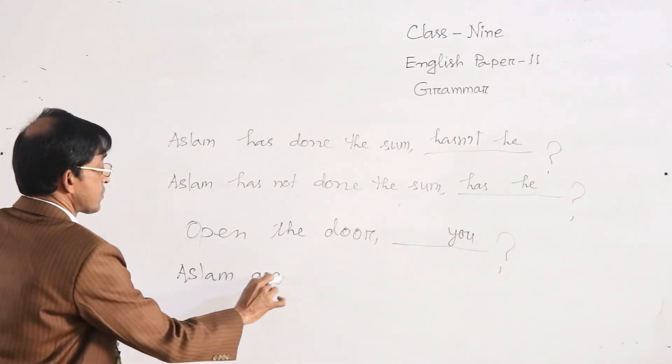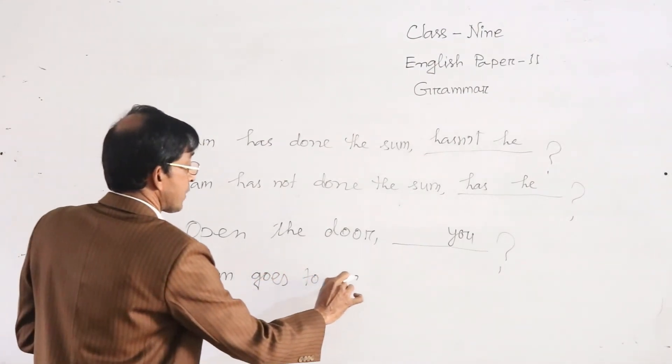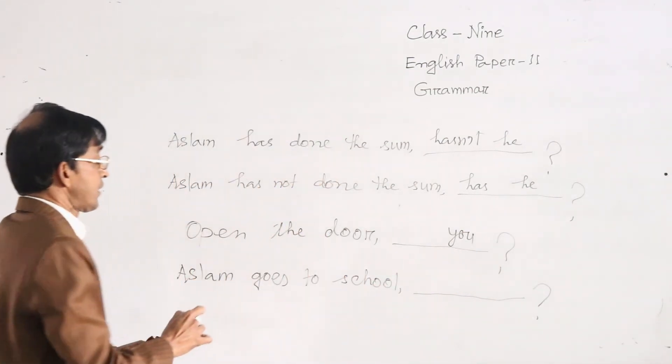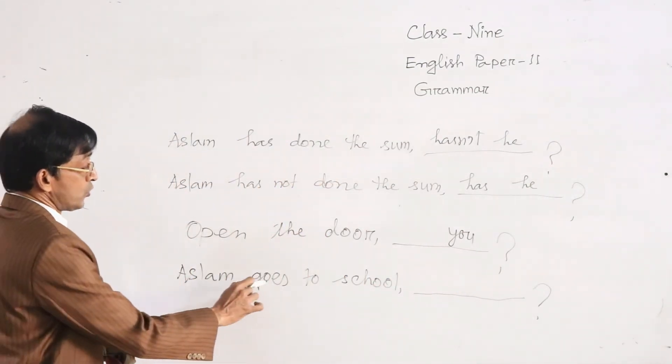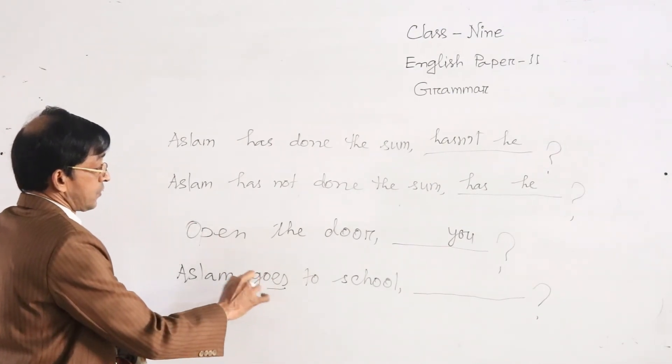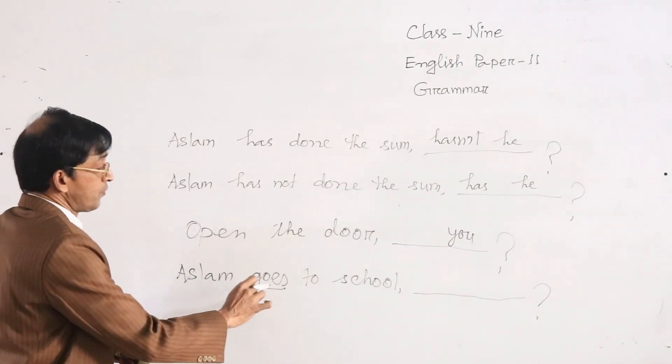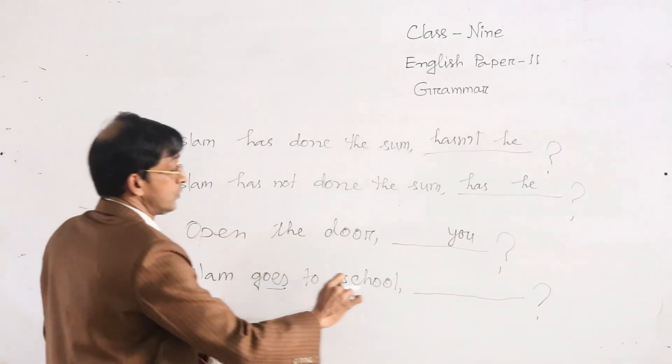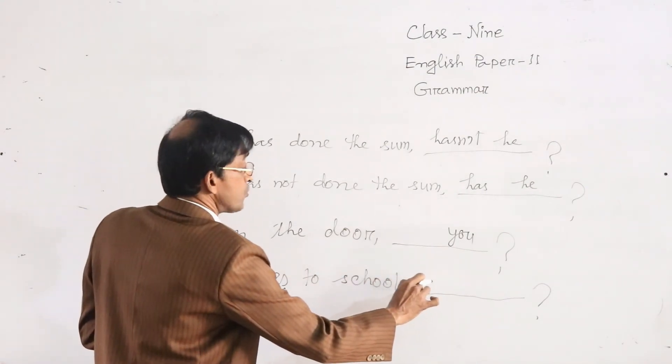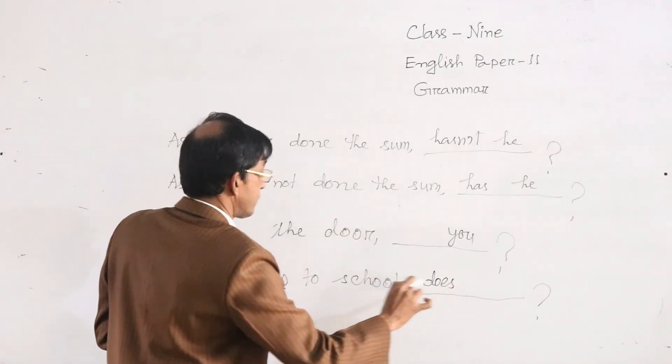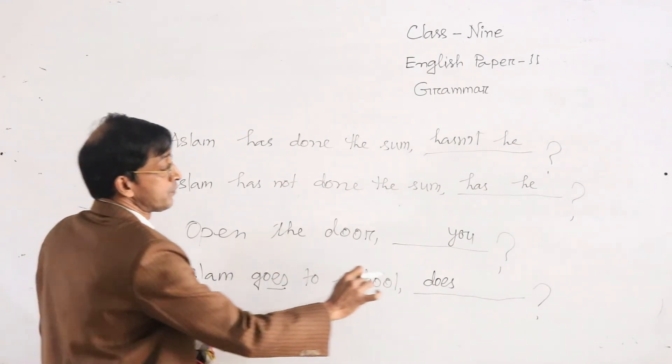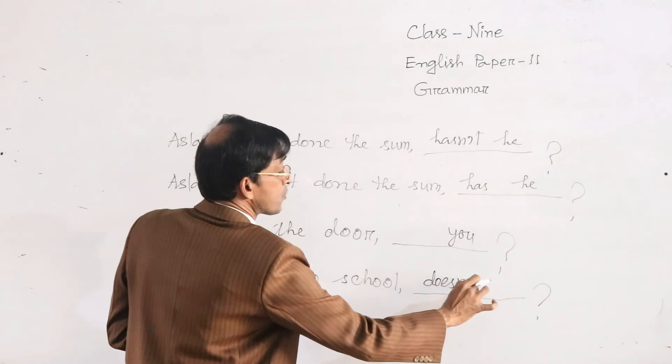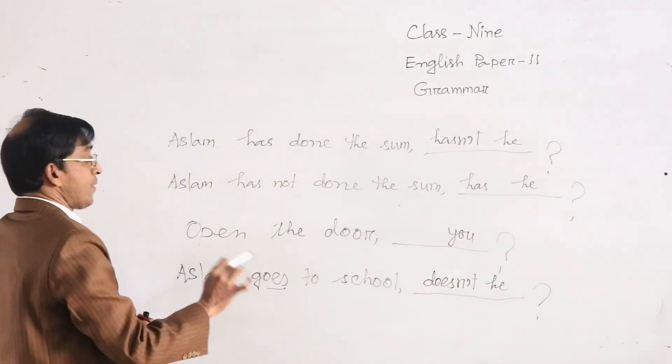Aslam goes to school. Here, auxiliaries are not available. So we may borrow do, does, did. Here, main verb is present form. So we may use have and s is added. So we may use does as auxiliary. If statement is affirmative, we may negative, doesn't he. Aslam, instead of Aslam, we may use he.